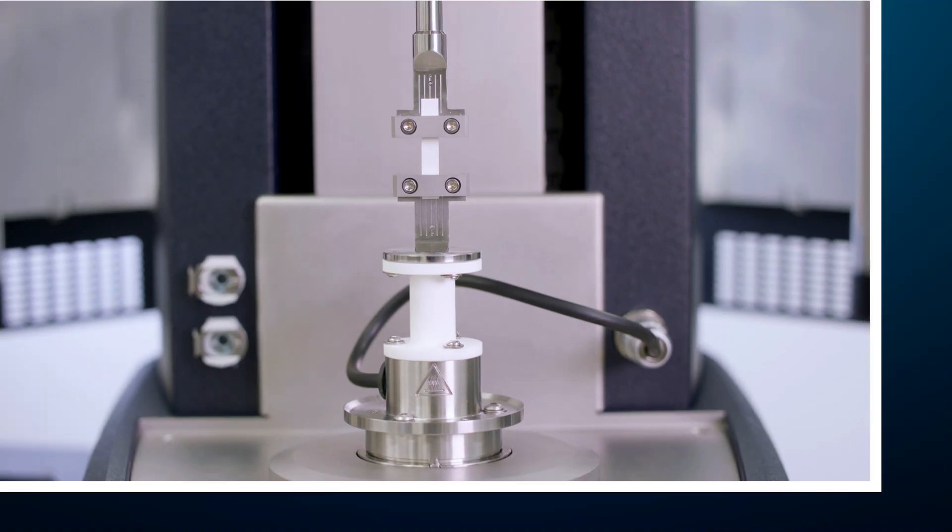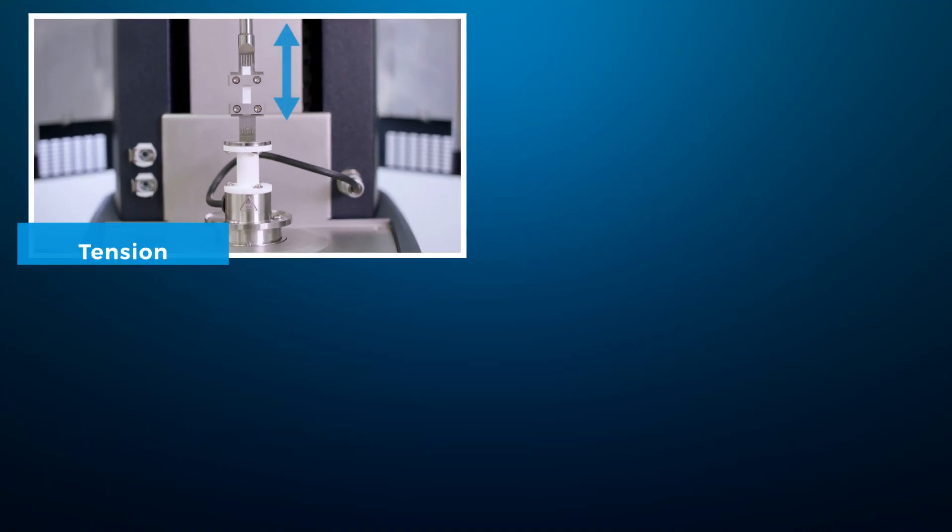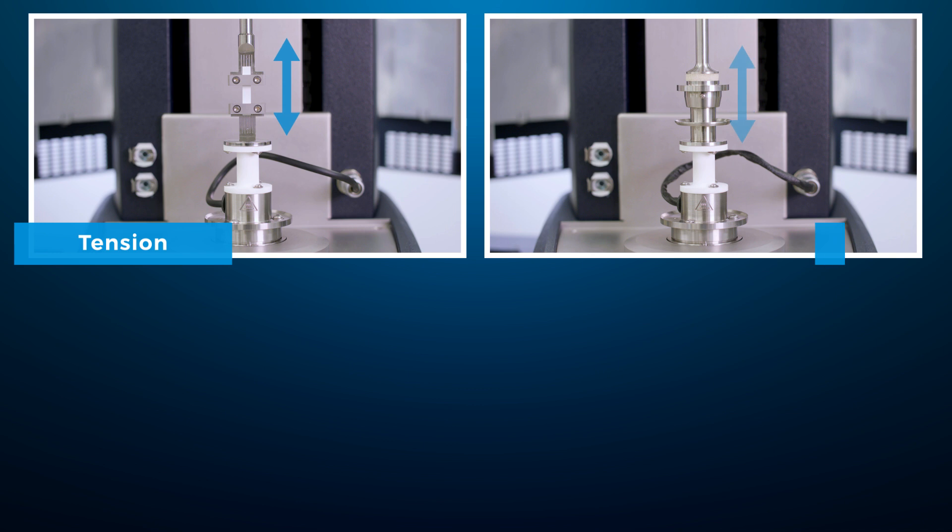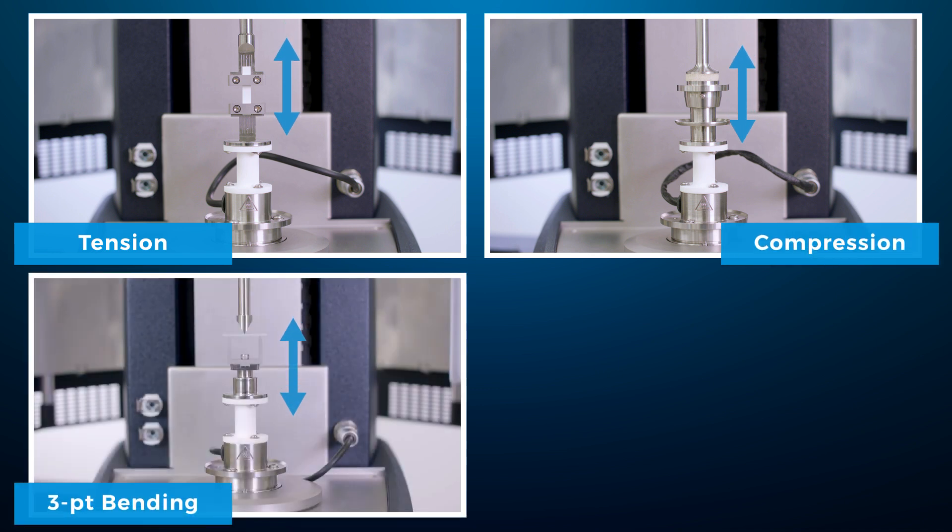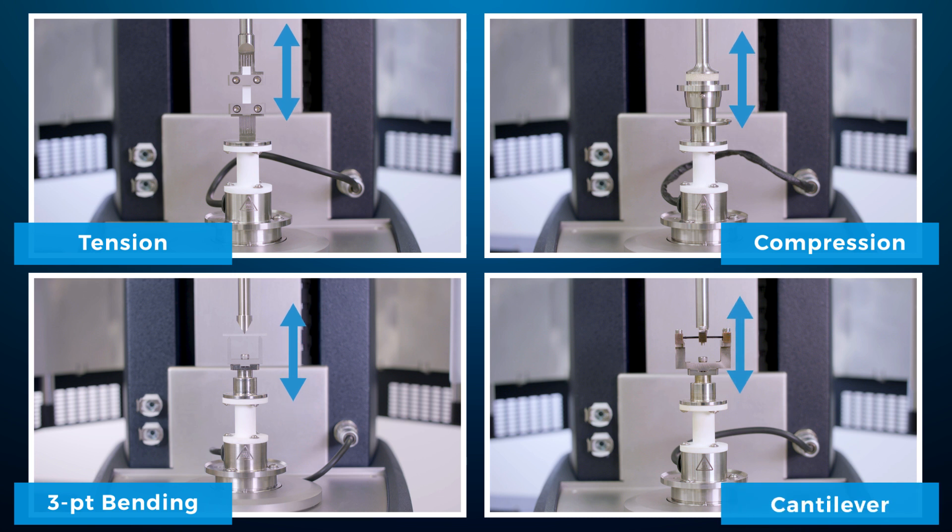In addition to standard torsional testing, the Discovery Hybrid Rheometer's integrated dynamic mechanical analysis capabilities also offers the ability to test samples under axial deformation mode. A full range of standard DMA geometries such as tension, compression, bending, and cantilever are available to perform DMA measurements on your rotational rheometer.